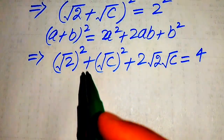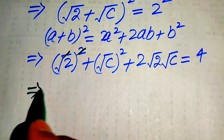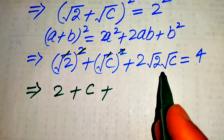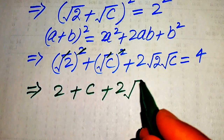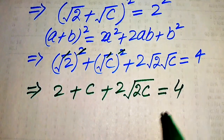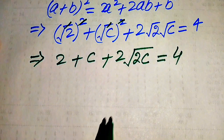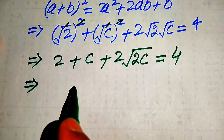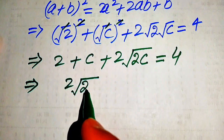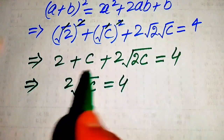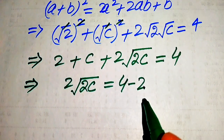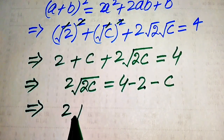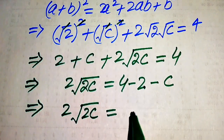In the next step, further simplification: the square and square root cancel giving 2, and similarly we get C only. Combining the square root terms gives 2 times √(2C), and this equals 4. To eliminate the square root sign we move all other terms to the right hand side, giving 2√(2C) equals 4 minus 2 minus C, which simplifies to 2√(2C) equals 2 minus C.